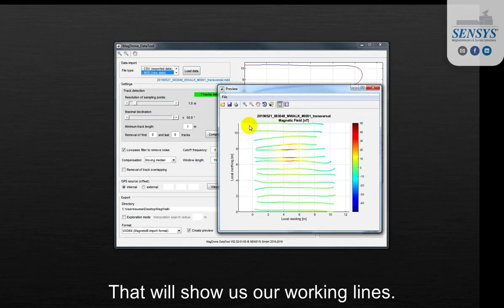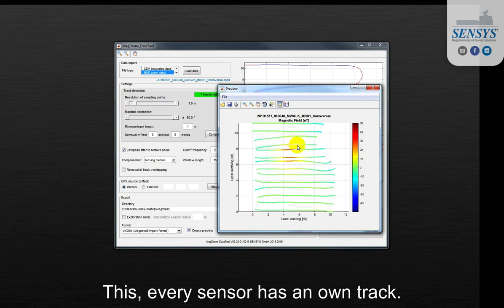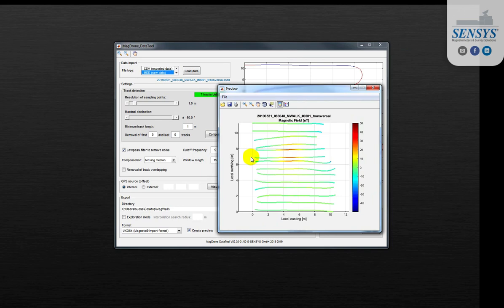That will show us our walking lines so every sensor has an own track and we can see that we catched the object here in the middle. So that is number one.